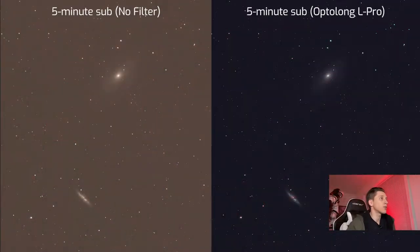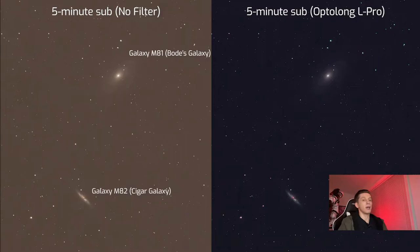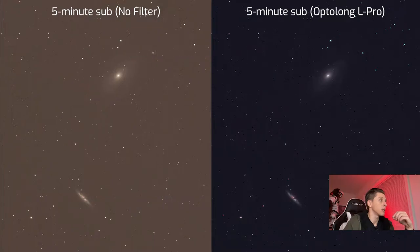So let's start with galaxies. On the screen there are two pictures of galaxies M81 and M82. On the left side of the screen I have a five minute sub that was taken without any filter at ISO 800, and galaxies appear pretty good here but we can notice some light pollution that affects the image.